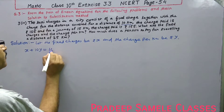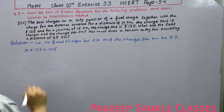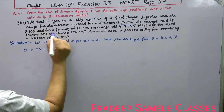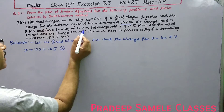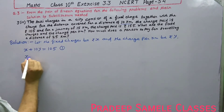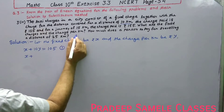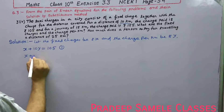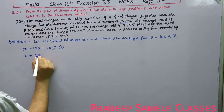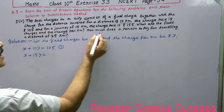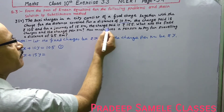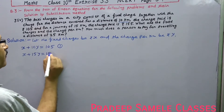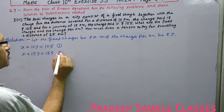For a distance of 10 km, the charge paid is Rs. 105. So Equation 1 is: X + 10Y = 105. For a journey of 15 km, the fixed charge X plus 15 times per kilometre charge Y, i.e., 15Y, and the charge paid is Rs. 155. So Equation 2 is: X + 15Y = 155.